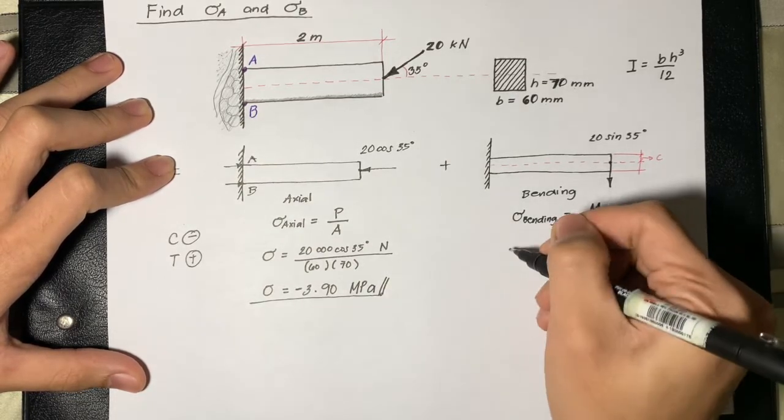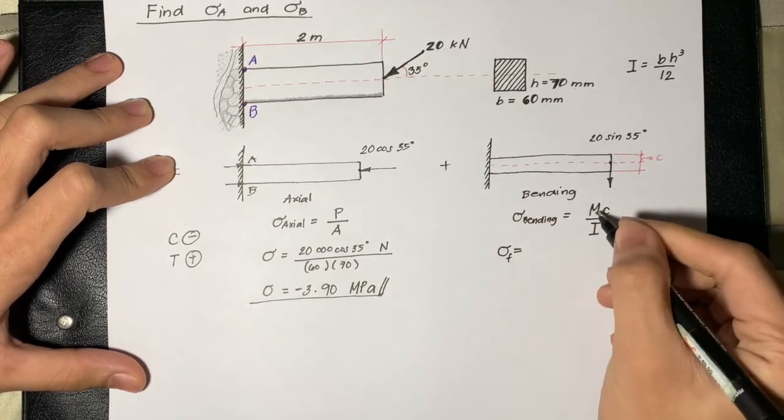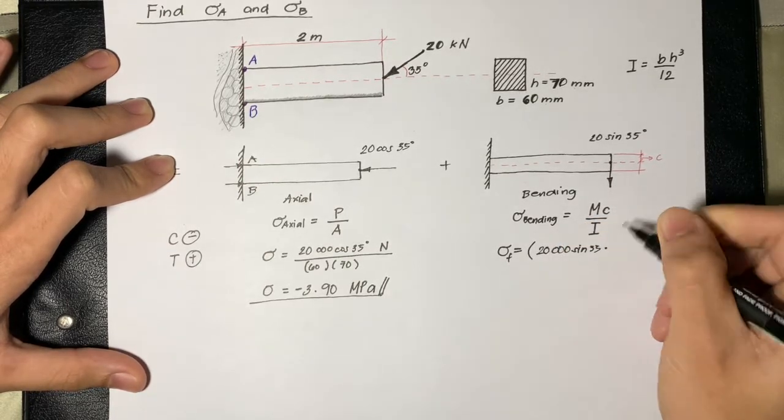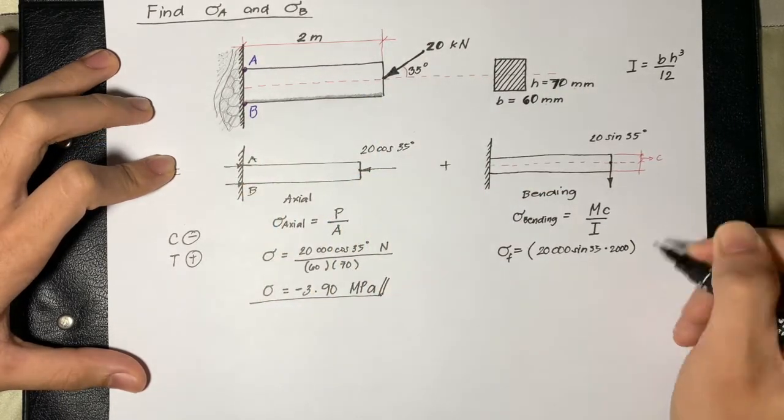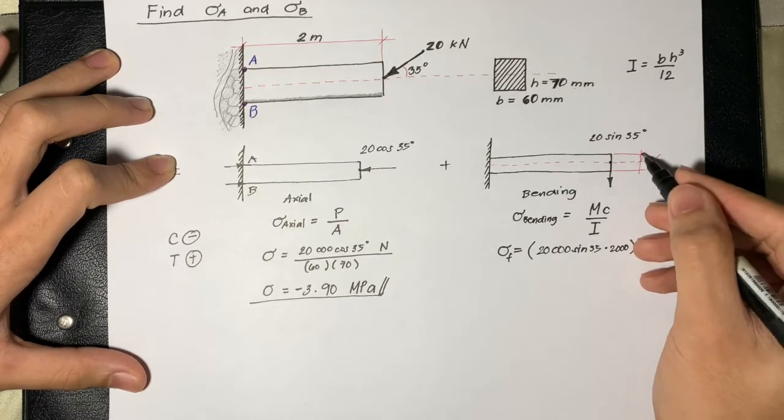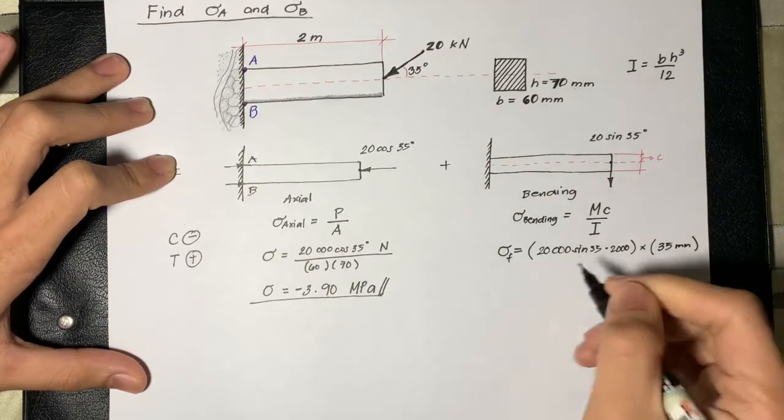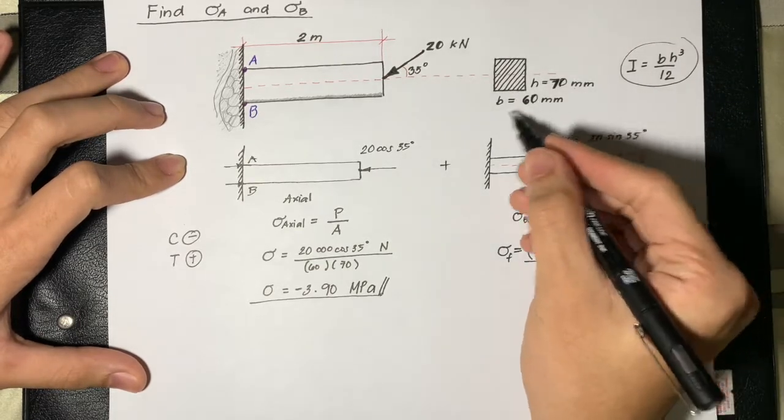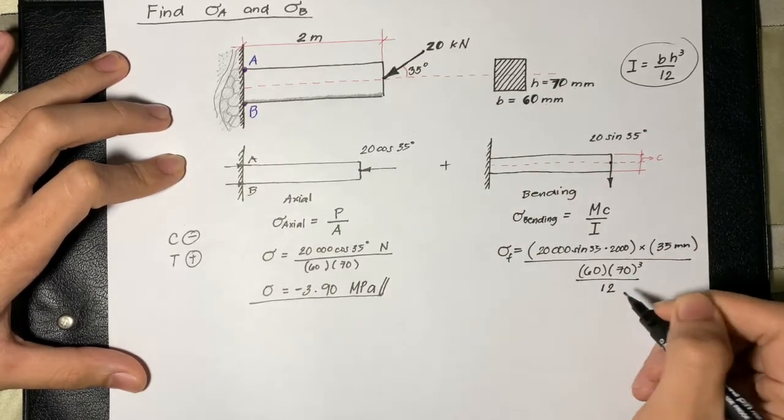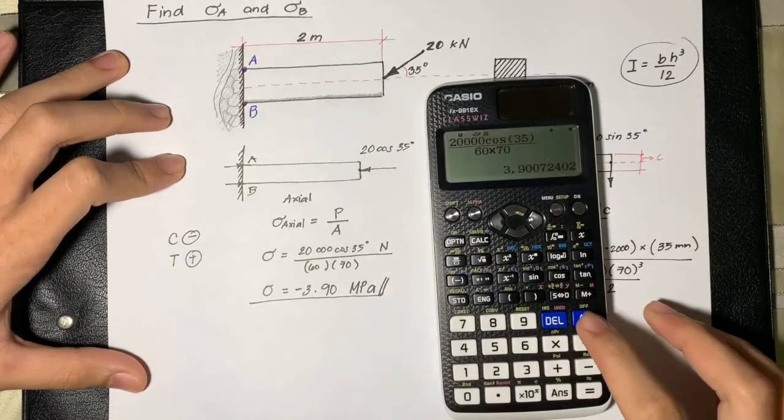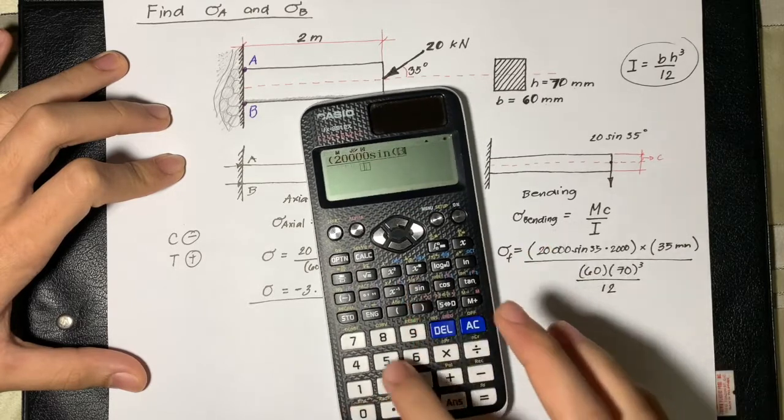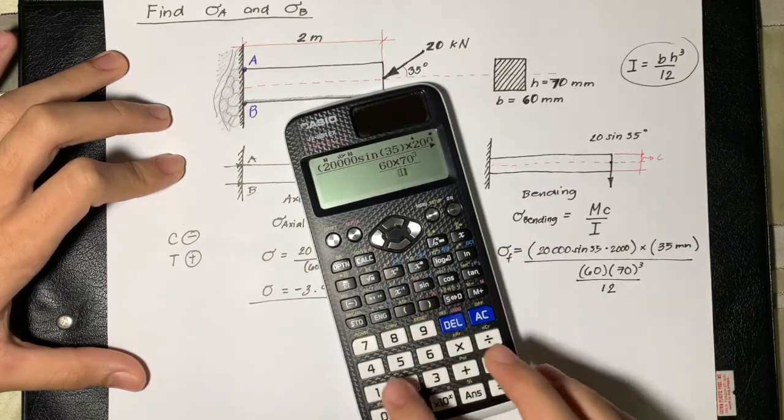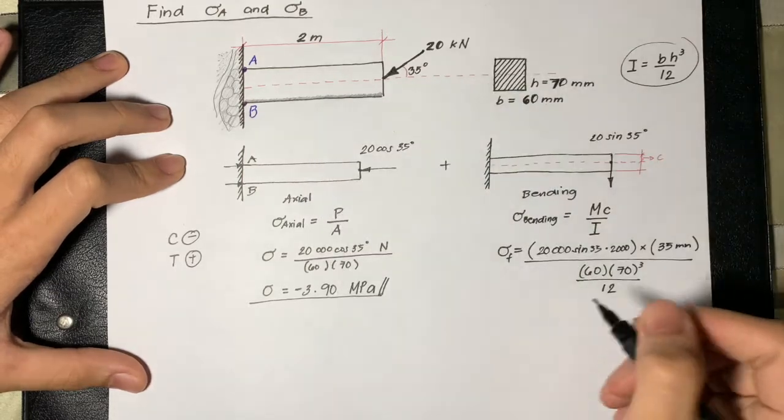Solving for the bending stress, we have the maximum moment which is 20,000 sine 35 degrees multiplied by the length of the beam in millimeters, which is 2,000, times the C, which is 35 millimeters, all over the moment of inertia, where B equals 60 multiplied by height 70 cubed all over 12. Solving using the calculator, we get 468.23 MPa.